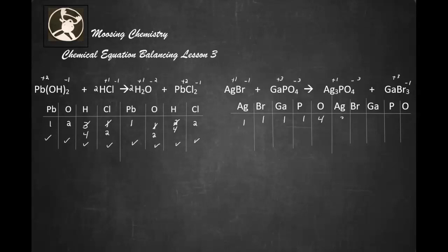So, silver, we have three of those. Bromine, we have three of those. Gallium, we've got one. We have one phosphorus and four oxygen. So, it looks like all I have to do is put a three in front of this AgBr.